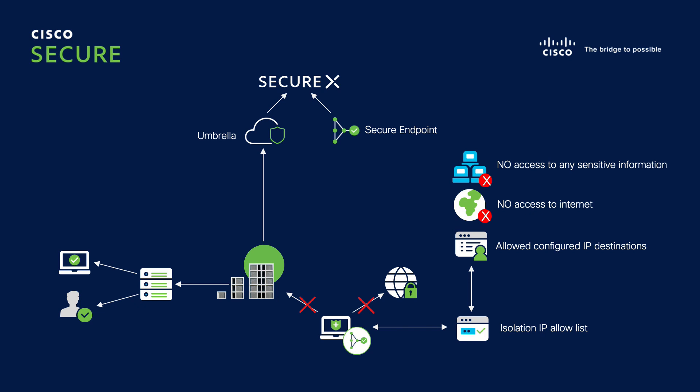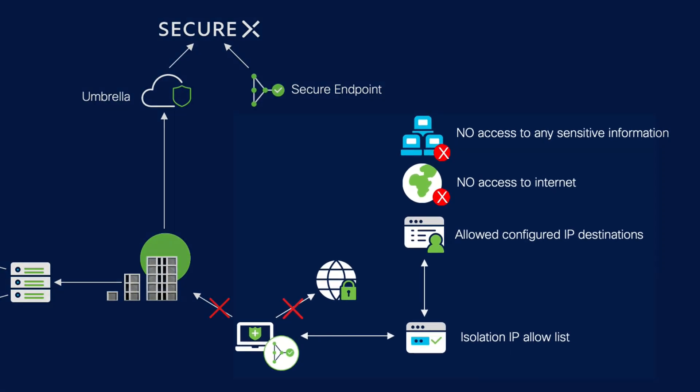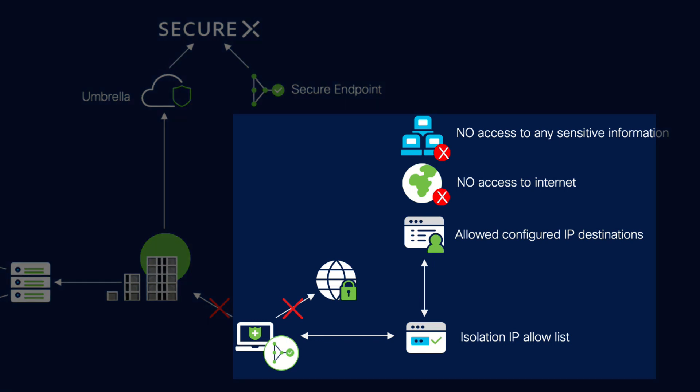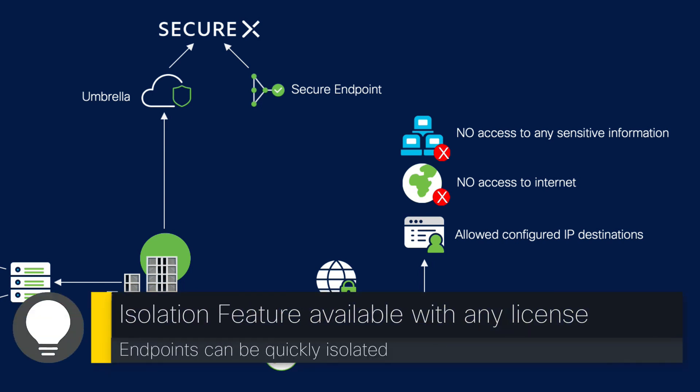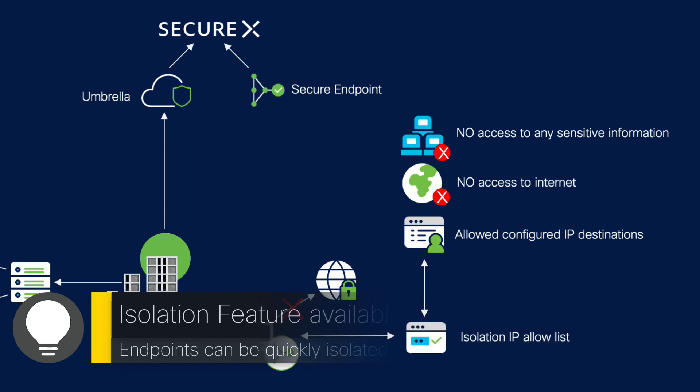As a pre-work task, an admin configured one or several isolation IP allow lists to ensure that necessary communication is possible, even when the endpoint is isolated. As an example, an analyst should still be able to connect to the endpoint, but communication to the internet or connecting to network file shares or web servers should be blocked. Cisco communication is available at any time, so there is no need to configure Secure Endpoint communication. Please note the isolation feature is available with any endpoint license.